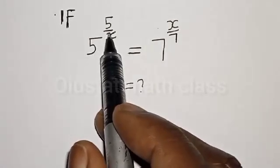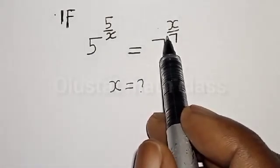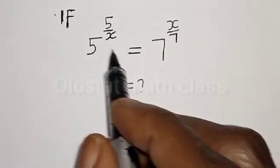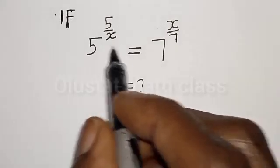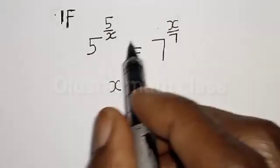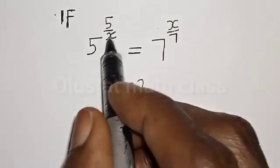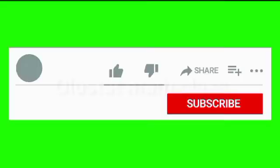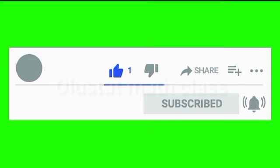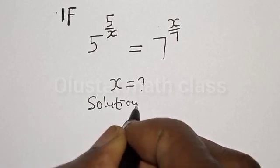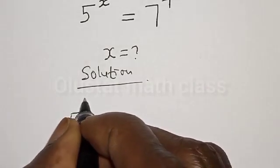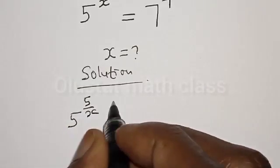If 5 raised to power 5 divided by x is equal to 7 raised to power x divided by 7, what is the value of x? Hi everyone, welcome to my class. In today's class we quickly want to find the value of x from this given exponential equation: 5 raised to power 5 divided by x is equal to 7 raised to power x divided by 7.